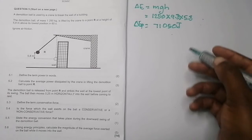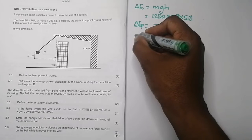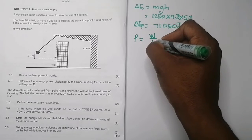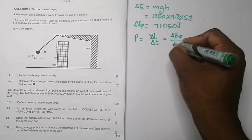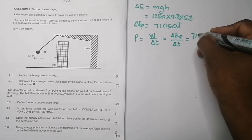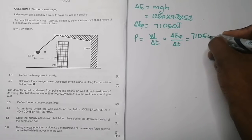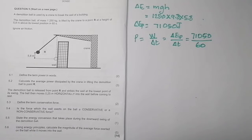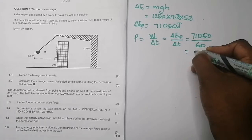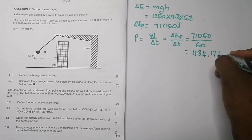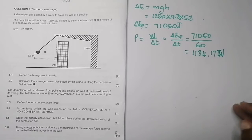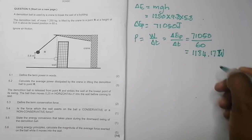To calculate power, we use power = work done ÷ time. The work done equals the change in potential energy, which is 71,050 joules, divided by 60 seconds. That gives us an average power of 1184.17 watts.